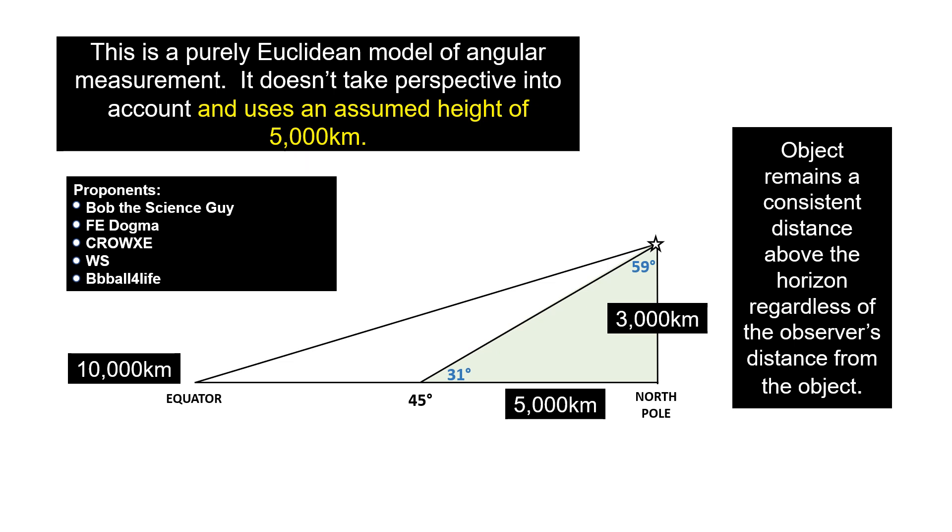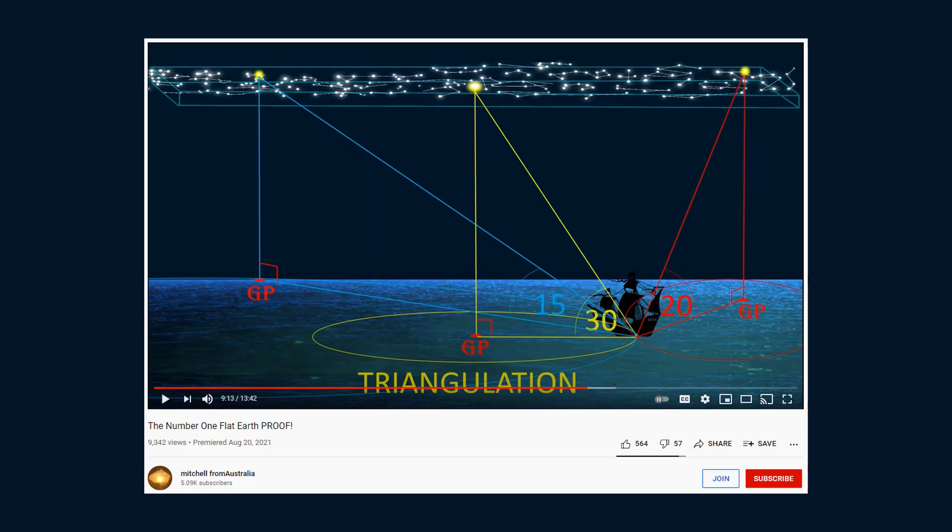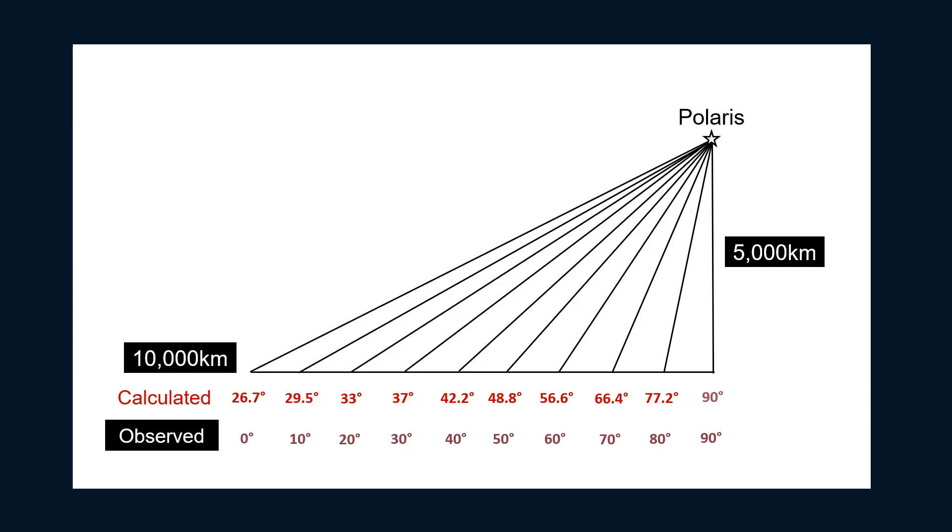And of course, I think we are seeing what the real problem with the flat earth model is. So again, flat earthers are making the claim that sextants and these right triangles only work on a flat earth. But as we can see in this example with Polaris,